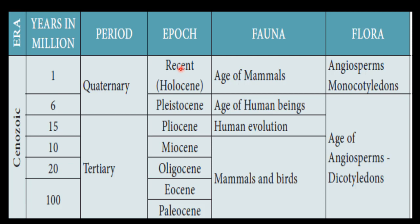In the Tertiary period, mammals and bats developed — from around 100 to 6 million years ago, and then from 6 million years onward. There is also the evolution of human beings in the last period, the Pliocene. Then comes the Quaternary period, that is the age of human beings.